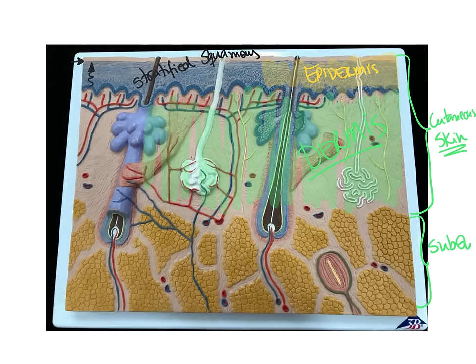To easily remember the five layers in order, remember the phrase: 'Come, Let's Get Sun Burned.' That stands for stratum Corneum, stratum Lucidum, stratum Granulosum, stratum Spinosum, and stratum Basale. The only detail to keep in mind is that you either have stratum lucidum or you have hair — you cannot have both.